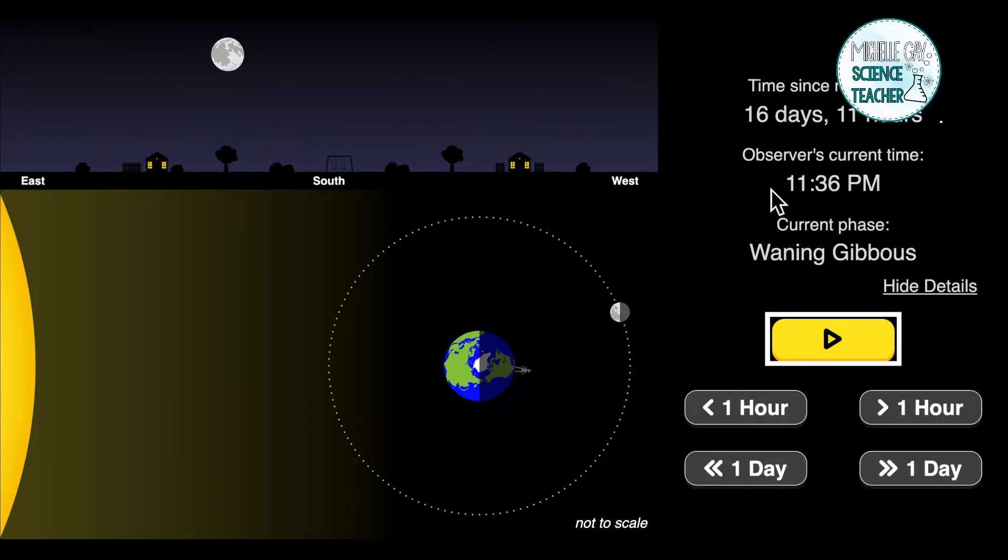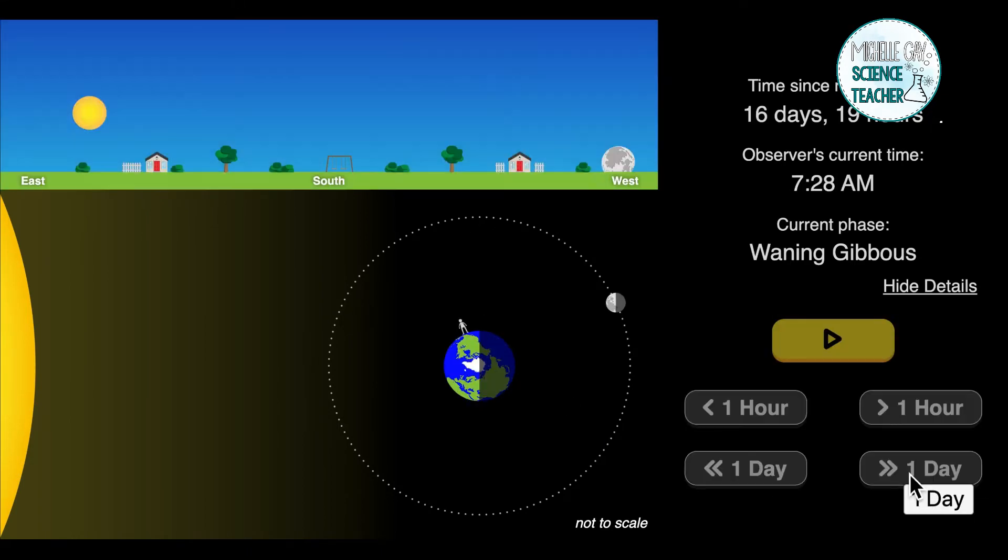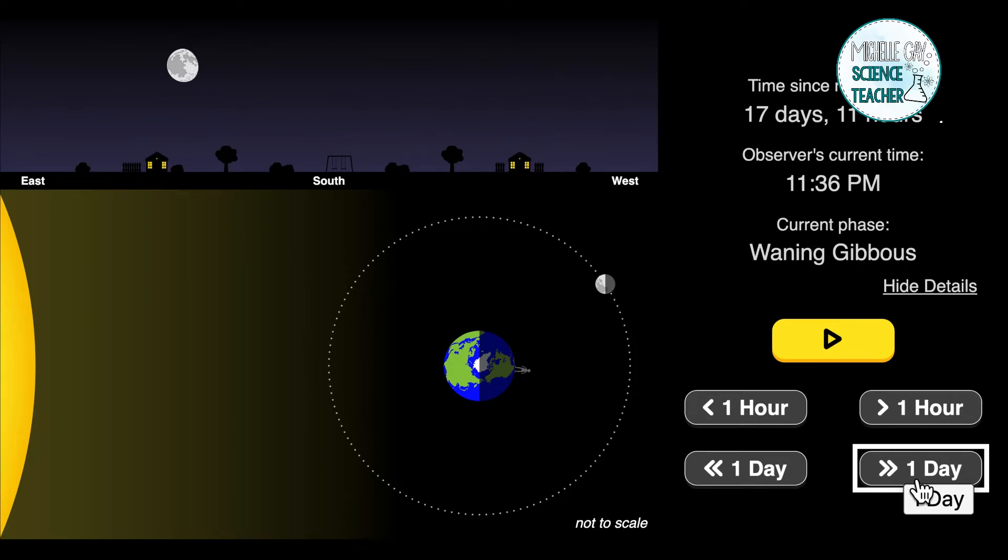We're at 16 days 11 hours and we still have a full moon. Let's go another day. Now that we've went another day, did you observe as the moon was traveling around the Earth? Now look at the moon closely. What are you noticing about the moon? It is beginning to get dark on this side.